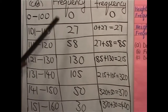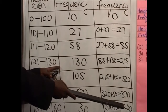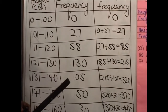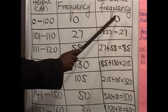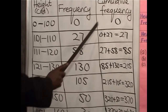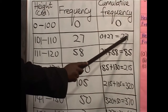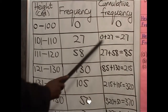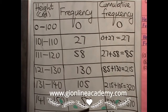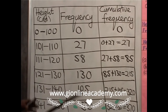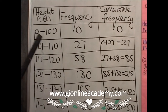So the cumulative frequency are the answers that we are getting with the addition. So we have the frequency. To find the cumulative frequency, we keep on adding. 0 plus 27, get 27. 27 plus that, you get this, and so forth. Now, we have made the cumulative frequency table.